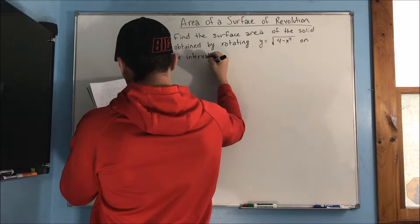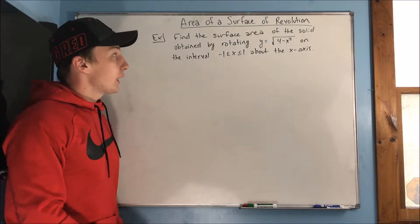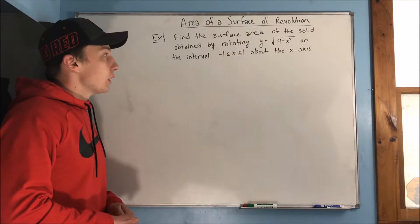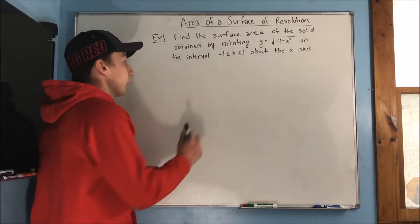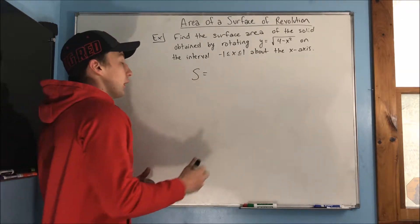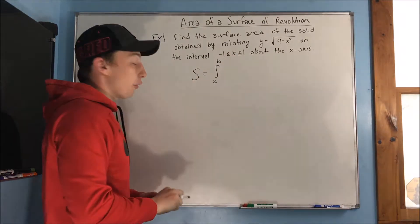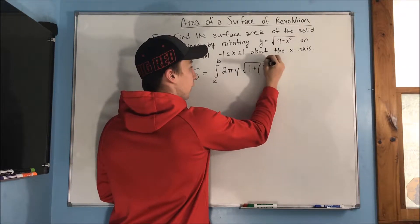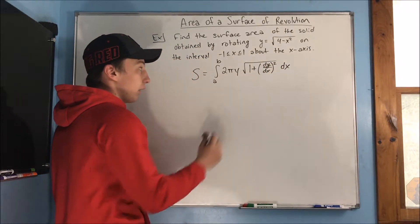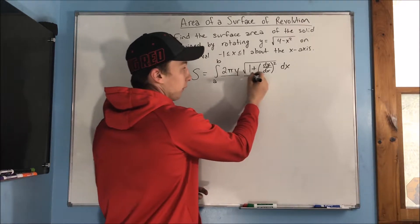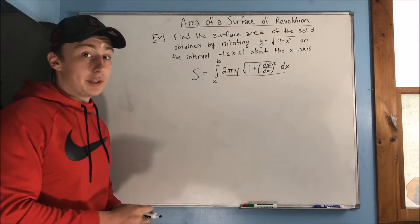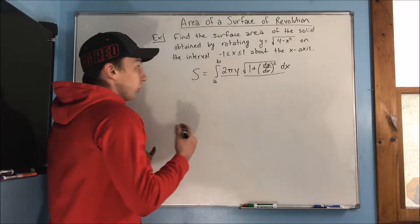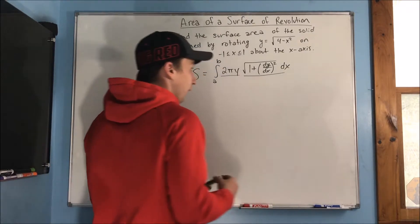Our example: find the surface area of the solid obtained by rotating y equals the square root of (4 minus x squared) on the interval negative 1 to 1 about the x-axis. Since we're revolving around the x-axis, our equation is: surface area equals the integral from a to b of 2πy times the square root of 1 plus (dy/dx)² dx. The key thing we need to find now is dy/dx squared.